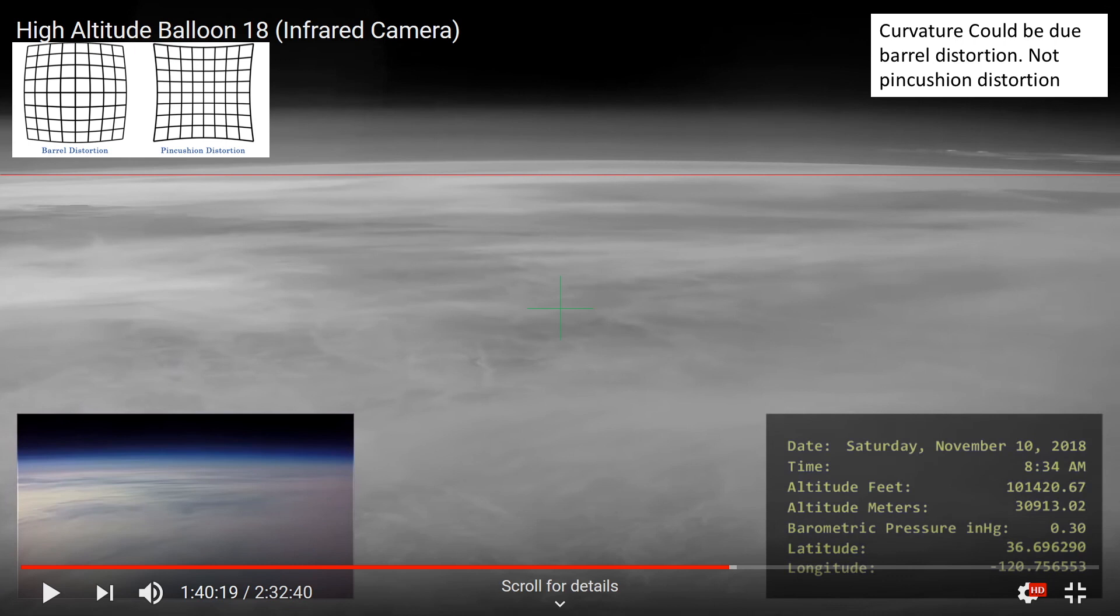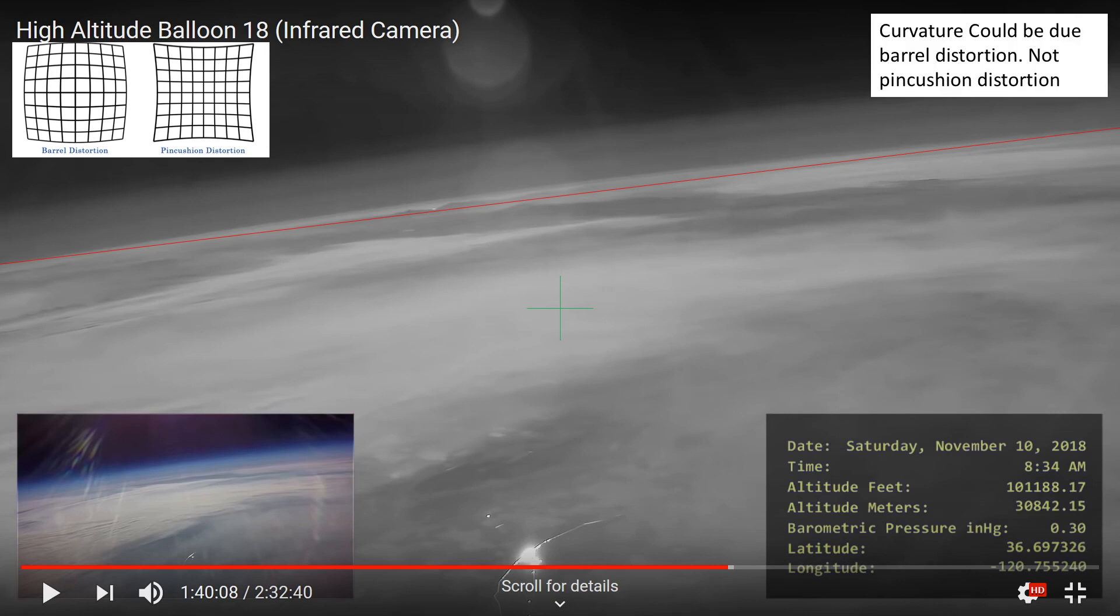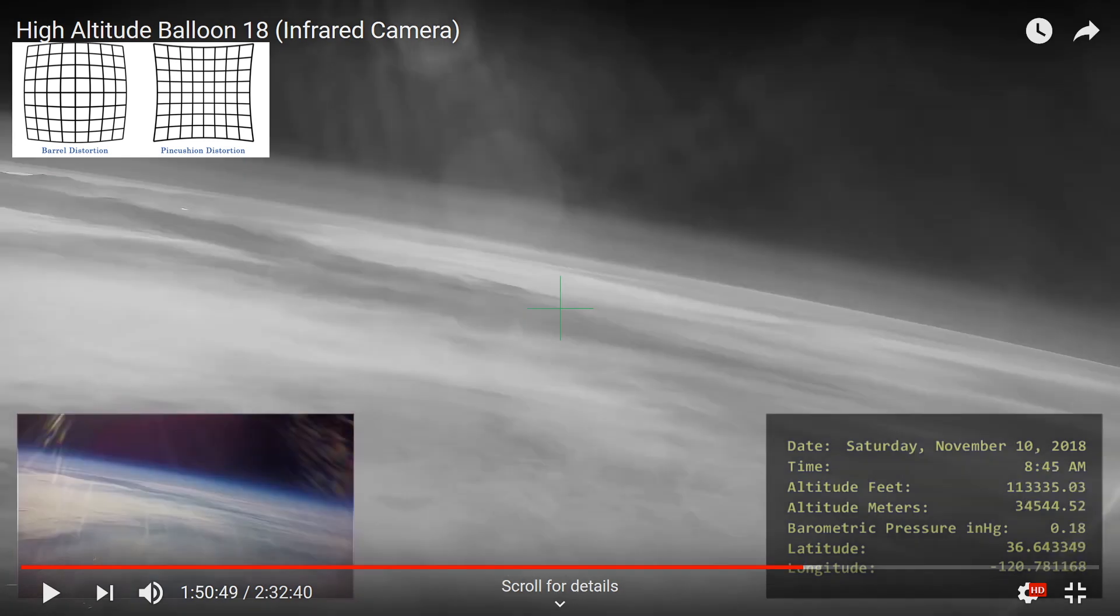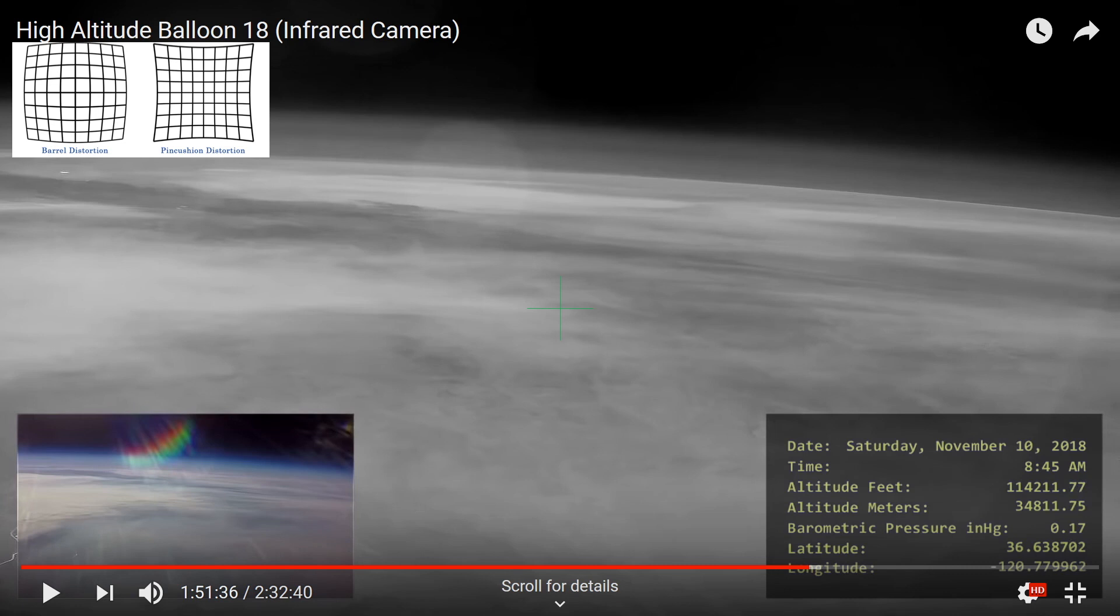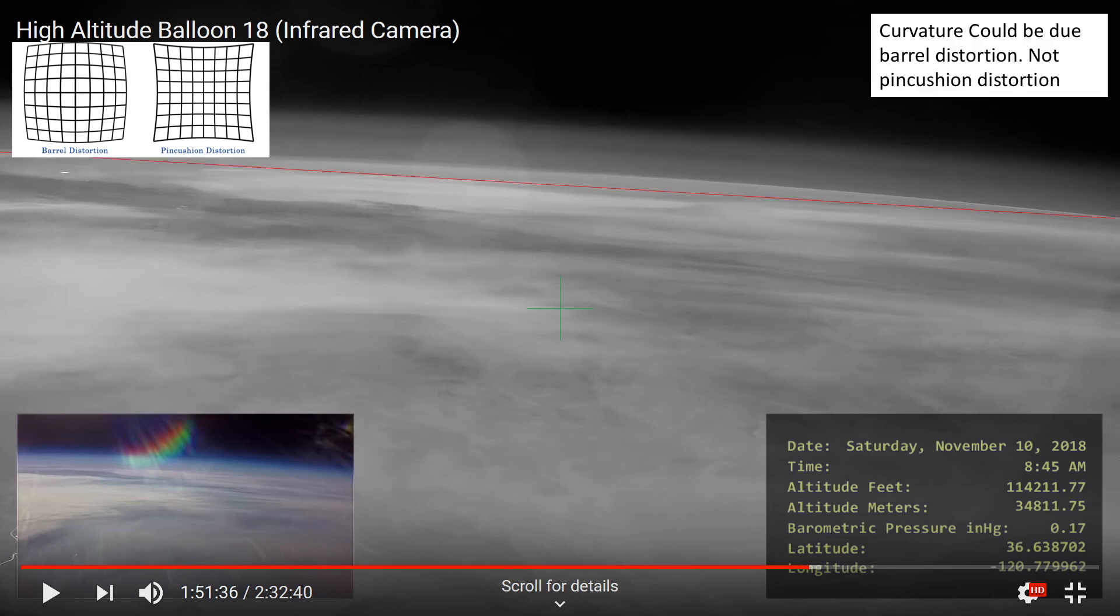And again, in this image, we see curvature, which can be attributed to barrel distortion or actual curvature in the horizon, but not due to pin cushion distortion. Now, I could go on like this for a very long time, as most frames in this gorgeous two and a half hour long video will show you the curvature of Earth.